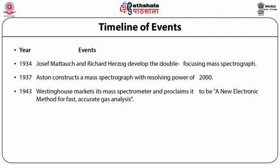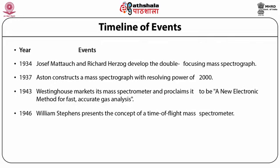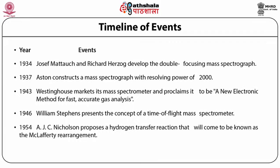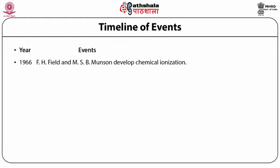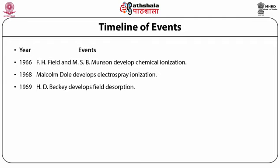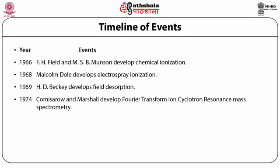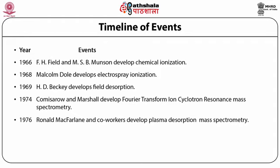In 1937, Aston constructed a mass spectrograph with a resolving power of 2000. In 1943, Westinghouse marketed its mass spectrometer, proclaiming it to be a new electronic method for fast, accurate gas analysis. In 1946, William Stevens presented the concept of a time-of-flight mass spectrometer. In 1954, A.J.C. Nicholson proposed a hydrogen transfer reaction that would come to be known as the McLafferty rearrangement. In 1959, researchers at Dow Chemical interfaced a gas chromatograph to a mass spectrometer. In 1966, F.H. Field and M.S.B. Munson developed chemical ionization mass spectrometry.